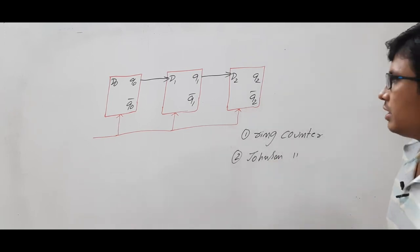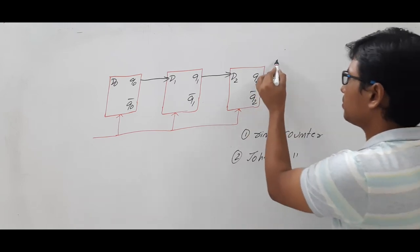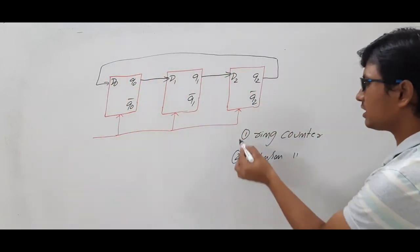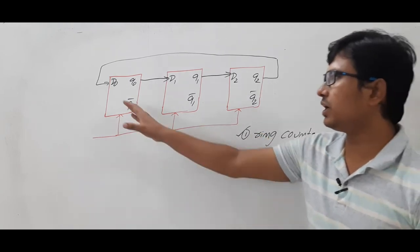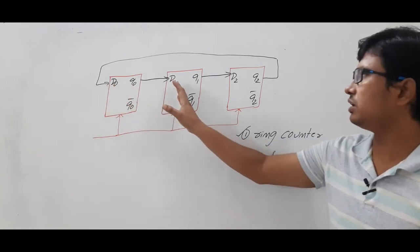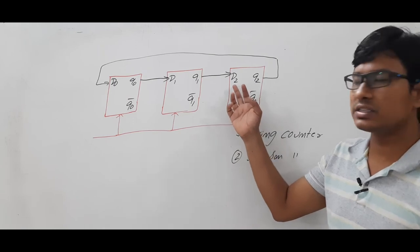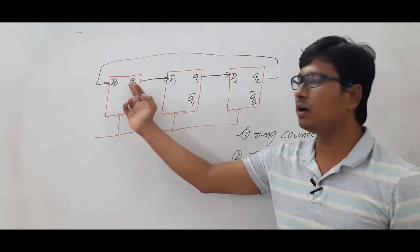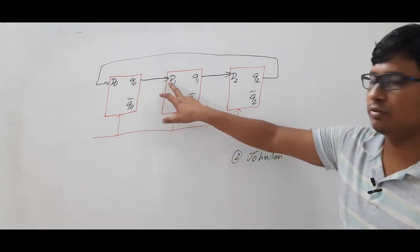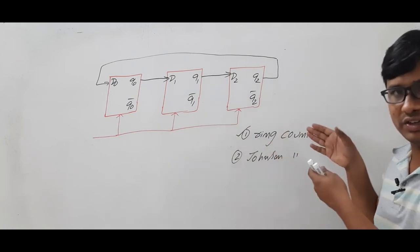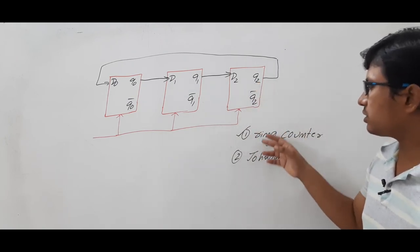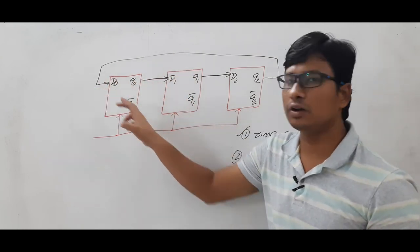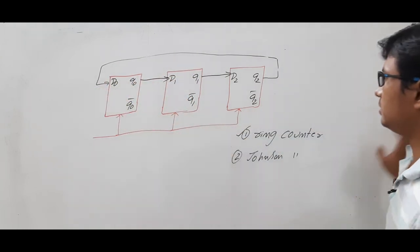If Q2 — the output of flip-flop D2 — is fed back as input to D0, then we call it a ring counter. So with three D flip-flops (D0, D1, D2), the output of each is shifted to the next, and the final output Q2 is given back to D0. This feedback arrangement is what defines a ring counter.